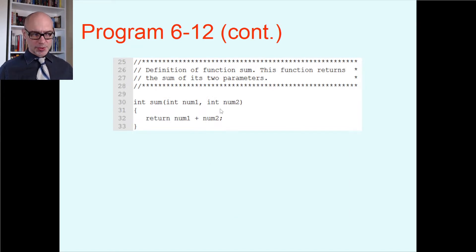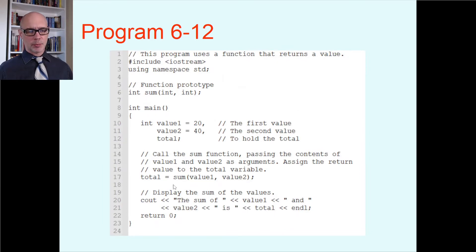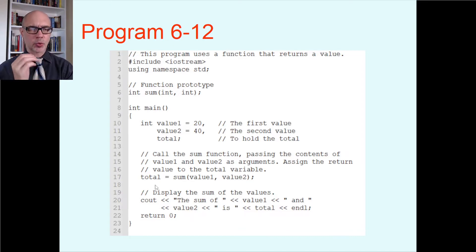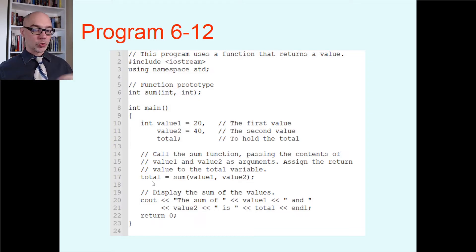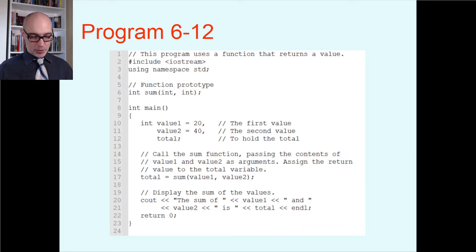The sum function takes in two integers, calling them num1 and num2, and returns num1 plus num2. When you add two integers the result is an integer, which syncs up with the return type of integer. If you have a value-returning function, make sure you do something with it. You could write just sum(value1, value2) and it will compile, but it's useless because it doesn't do anything with the return value. Assign it to a variable, print it, or use it in math — otherwise the result just gets thrown away.